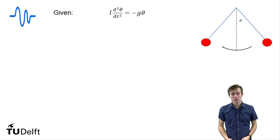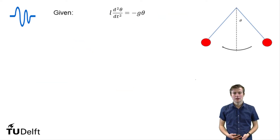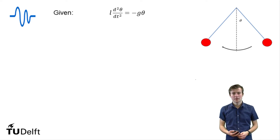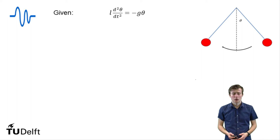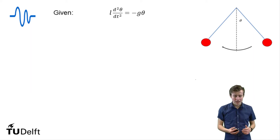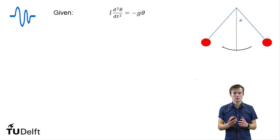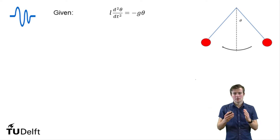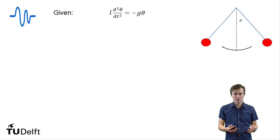In the lecture I was told that this motion follows the following differential equation, which is l times the second derivative of theta is equal to minus g times theta. I want to make a small remark: this equation only holds if theta is small. If theta becomes too large, this equation is not valid anymore and we cannot use it, but for now this is fine.